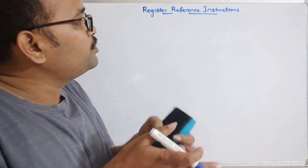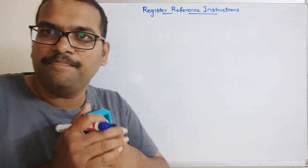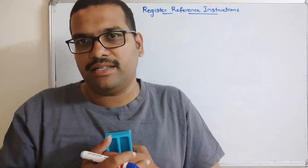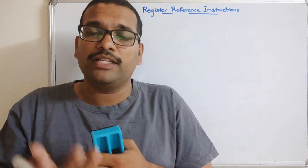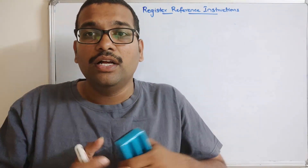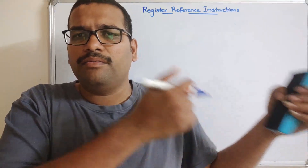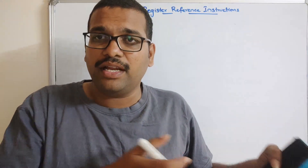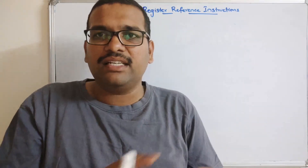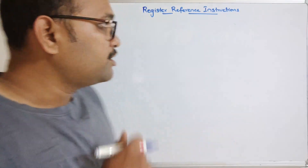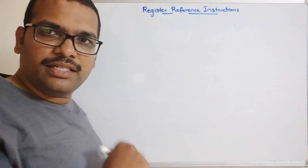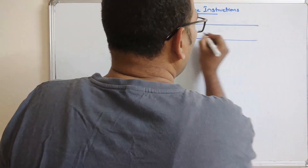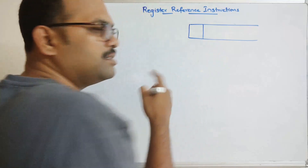Now we will see the instructions which come under register reference. The name itself indicates — the operations will be done on the register itself. So if you want to execute any kind of instruction, nothing is to be fetched from the memory. Everything will be in the registers and operations will be performed between the registers. The instruction format length is as usual — it is 16 bits.